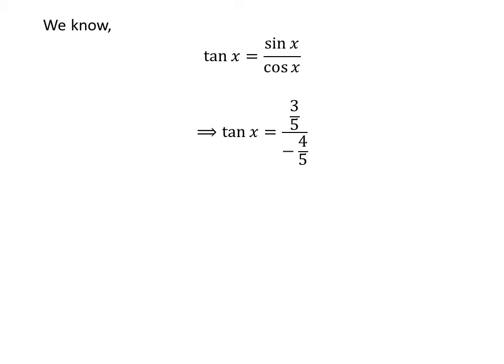The expression becomes tangent of x is equal to 3 upon 5 divided by minus 4 upon 5. In the above expression, 1 upon 5 is the common factor in the numerator and the denominator, so cancelling out the common factor gives us tangent of x is equal to minus 3 upon 4.